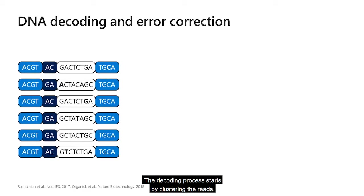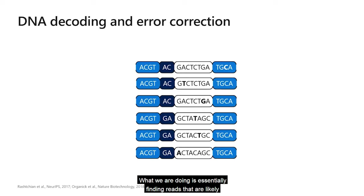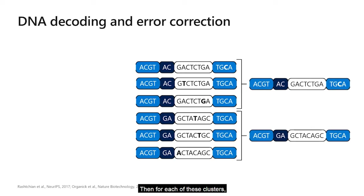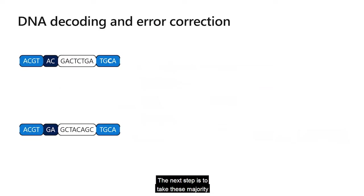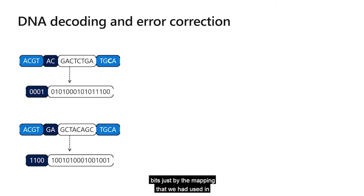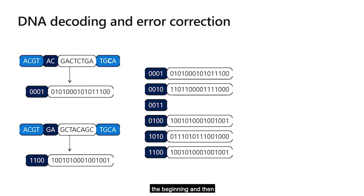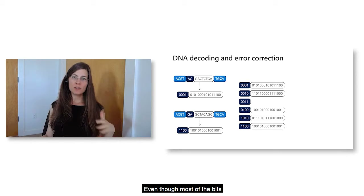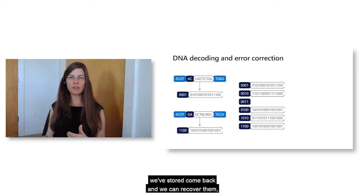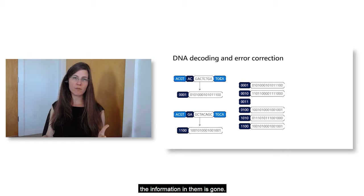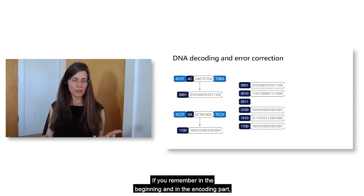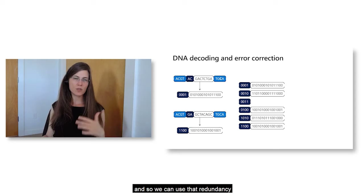The decoding process starts by clustering the reads — finding reads that are likely to have come from the same location in the original file. For each cluster, we do majority voting to determine the most likely sequence from that position. The next step is to take these majority-voted sequences and translate them back into bits using the original mapping, then reorder them based on their sequence number. Even though most bits come back successfully, some molecules are missing and the information in them is gone.